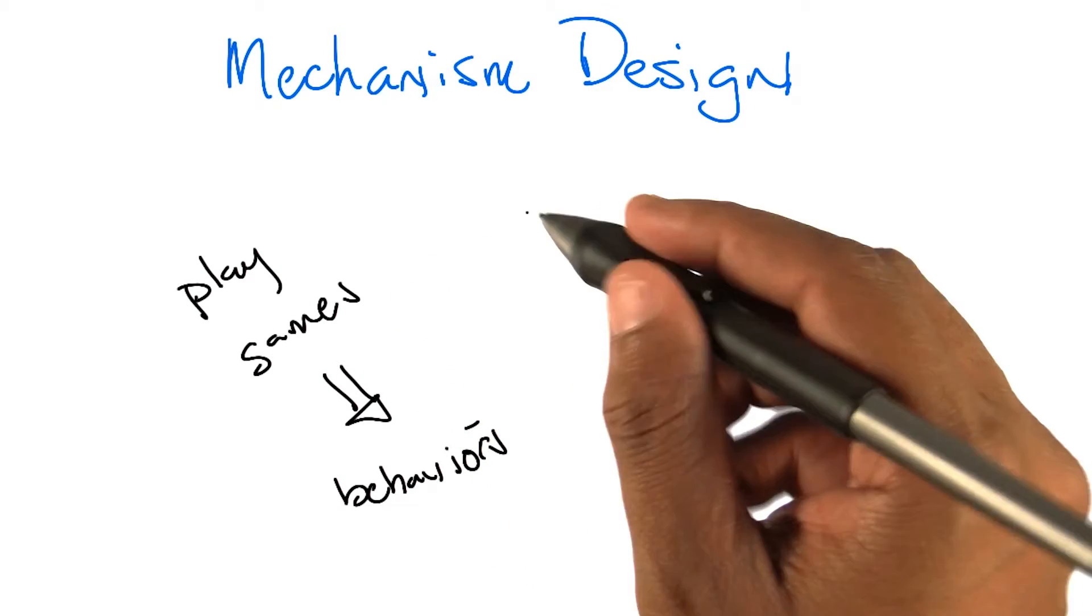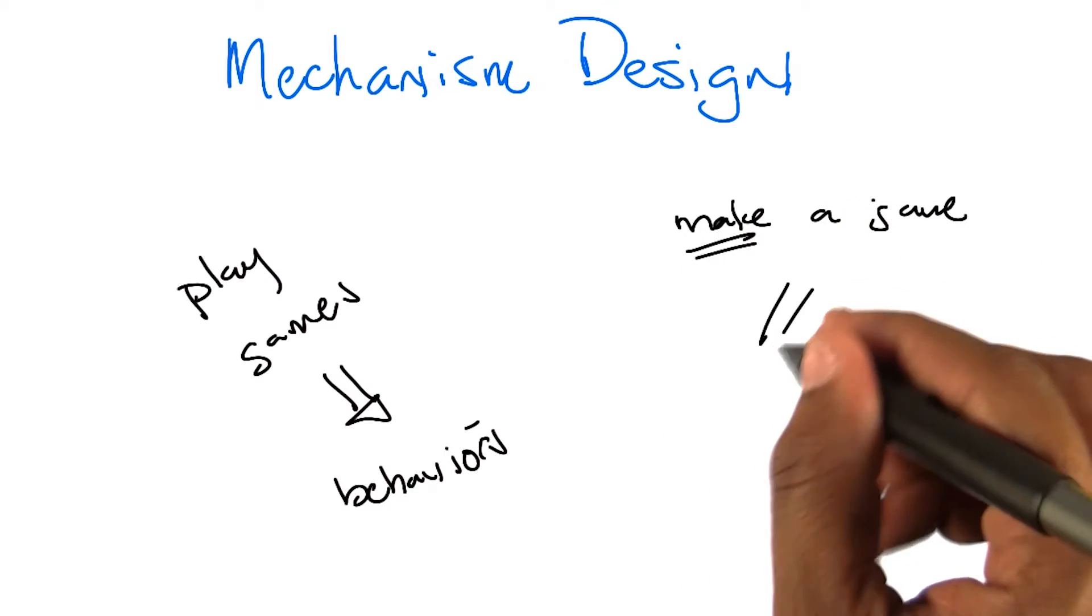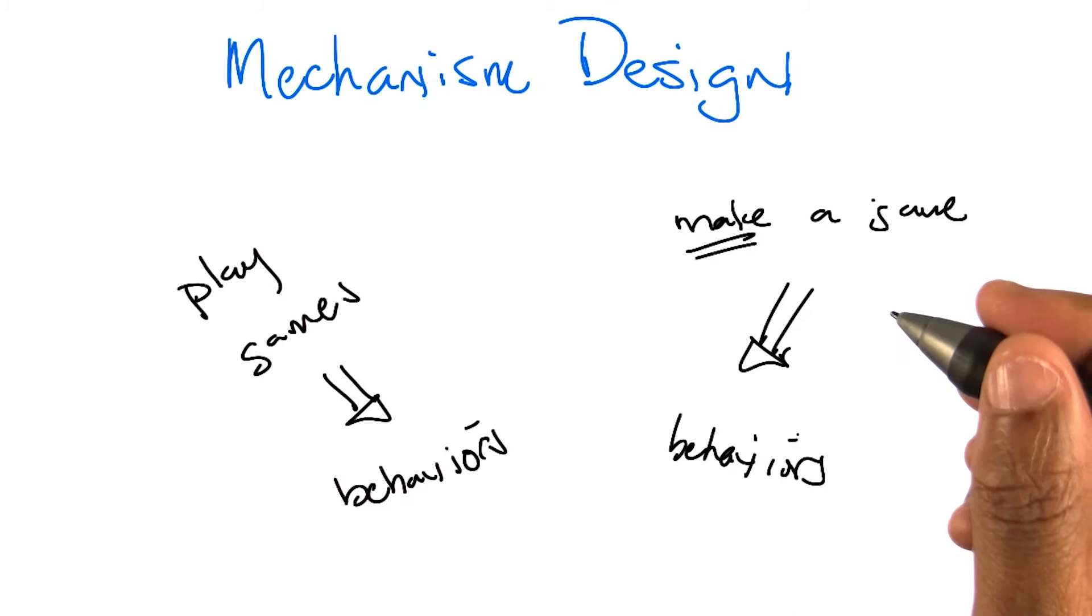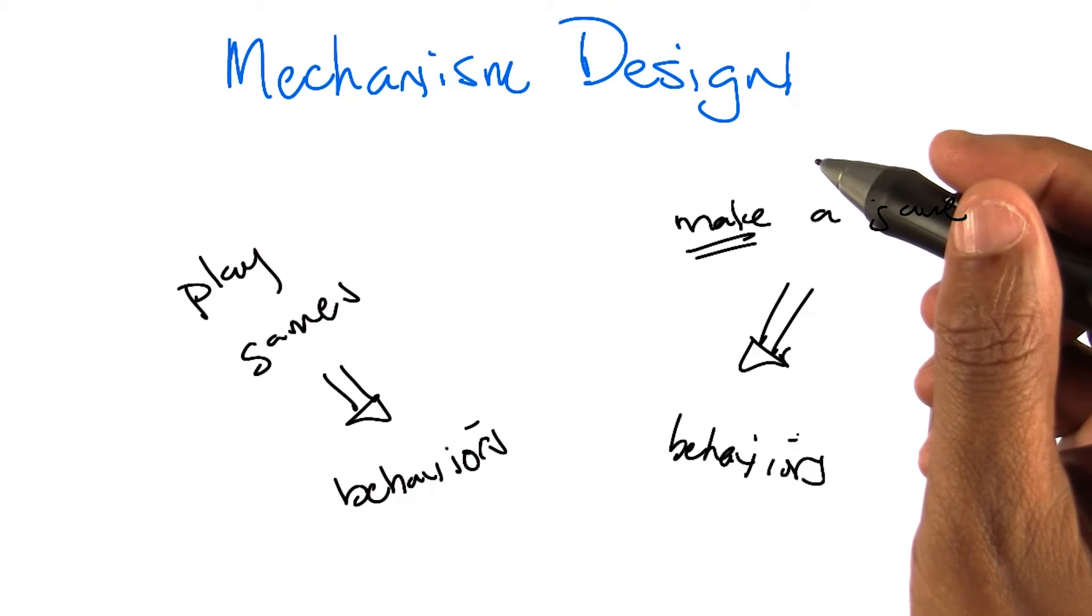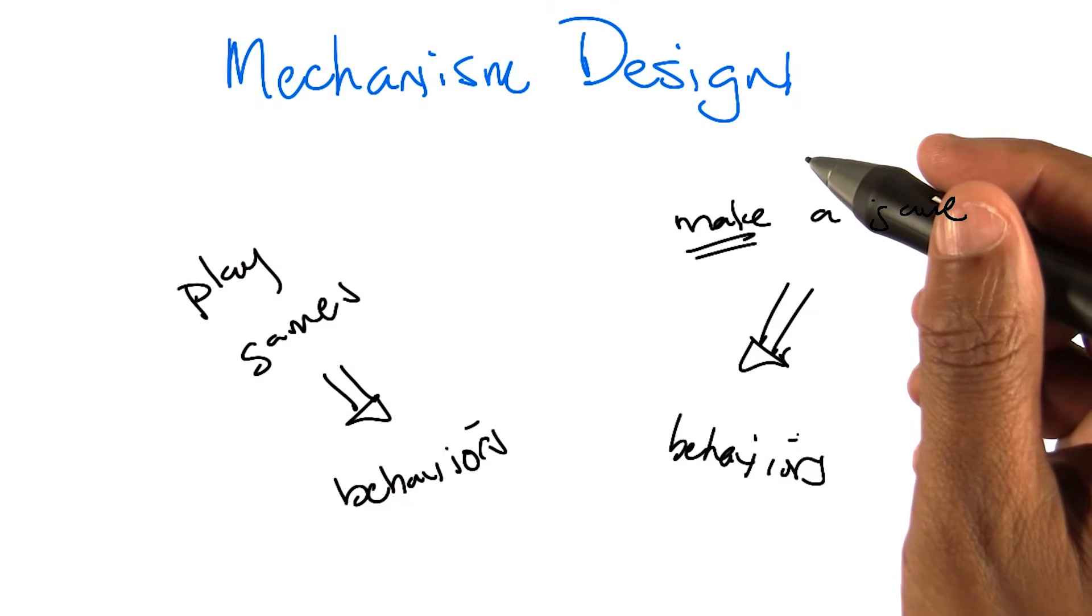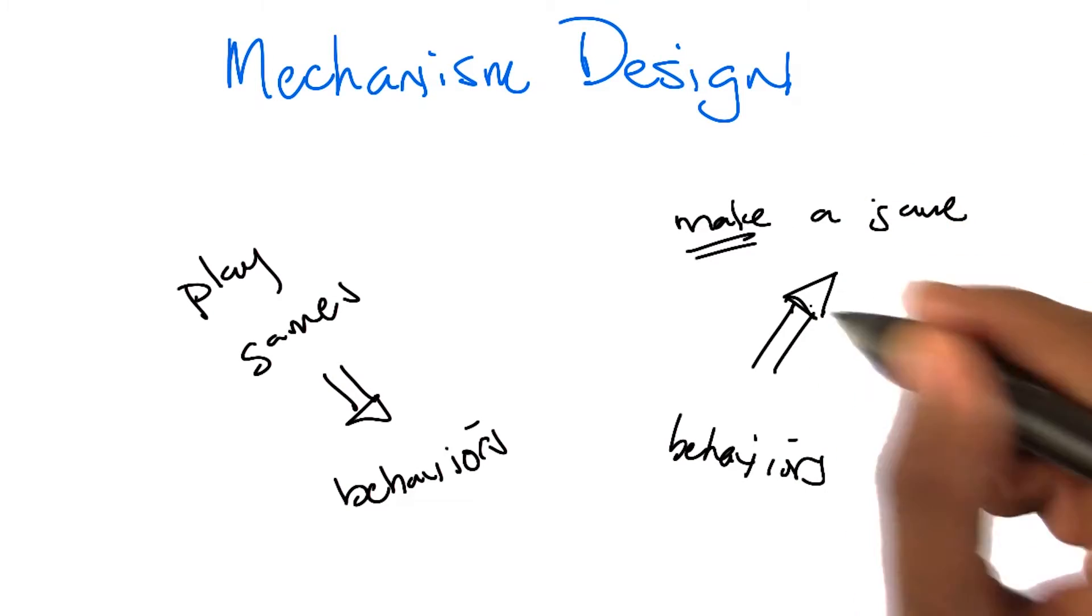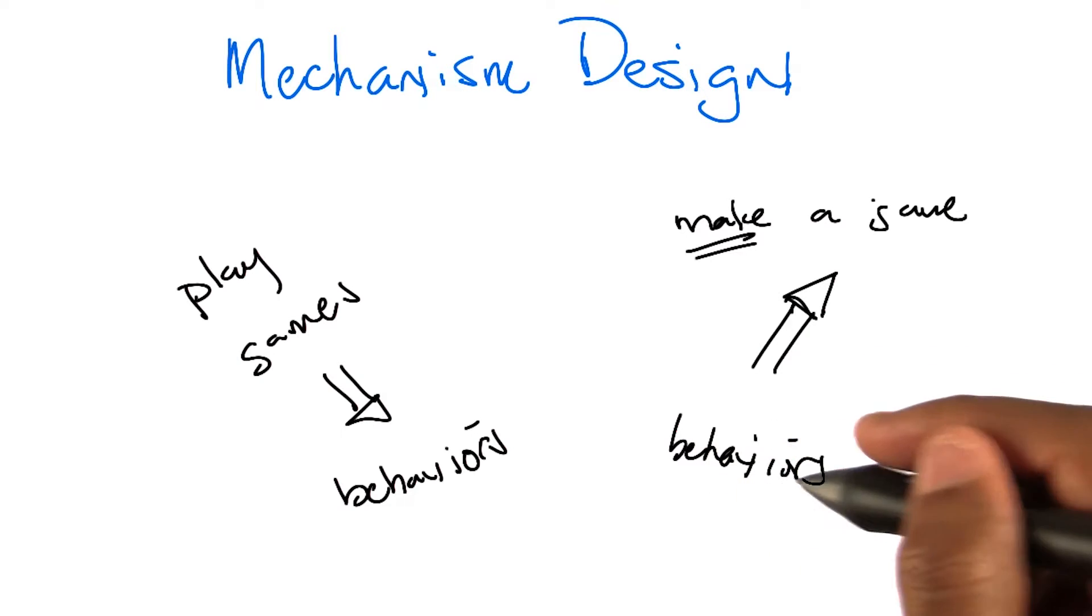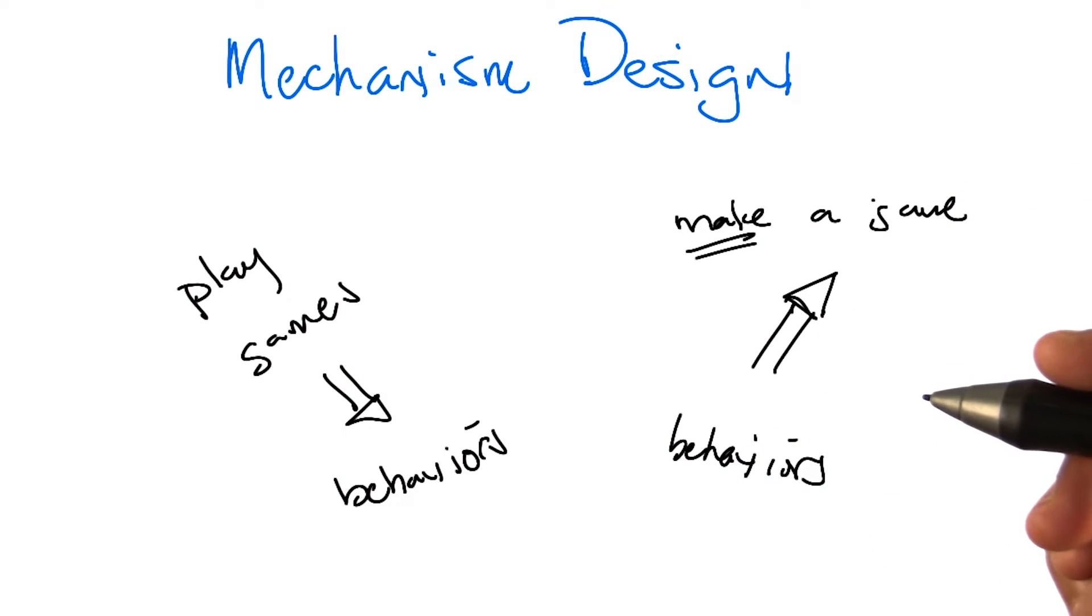But here what we want to do in mechanism design is we want to make a game, not just play a game, but with the end goal of getting some specific behavior. Does that make sense? It feels kind of like inverse reinforcement learning, in that we're going from the behavior that we want to a game that would make that behavior, whereas in regular game theory we go from the game to the behavior. I like that. In fact, I like it so much I will draw the arrow that way. So here, we have a behavior we want, and we're going to come up with a game that would actually lead to that behavior.